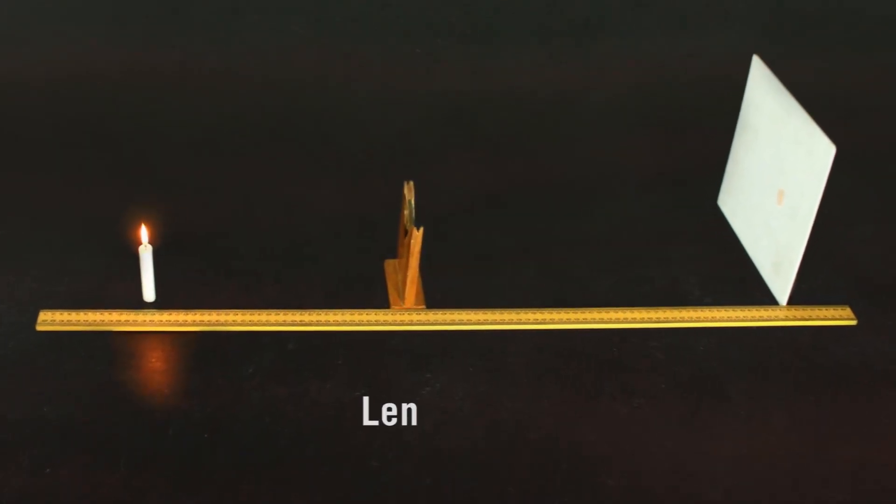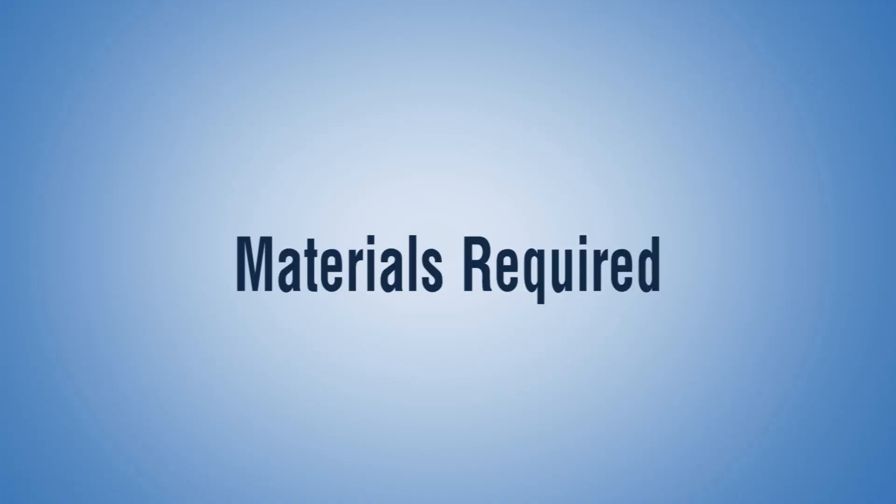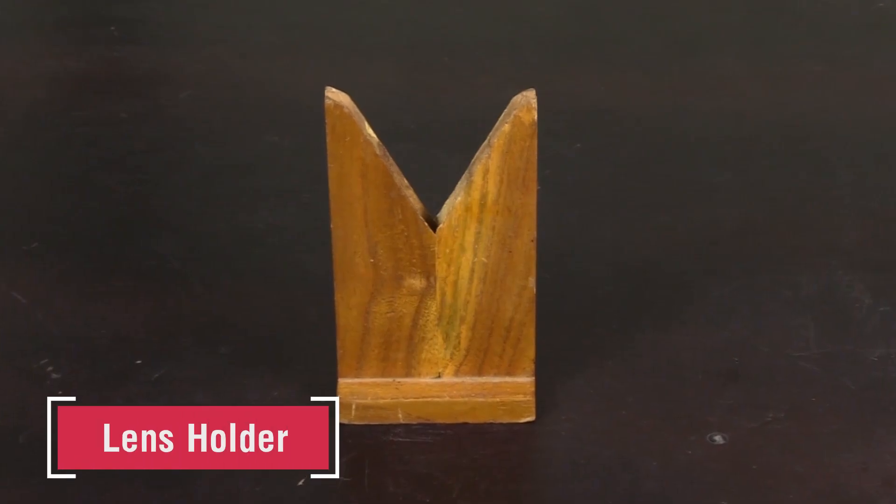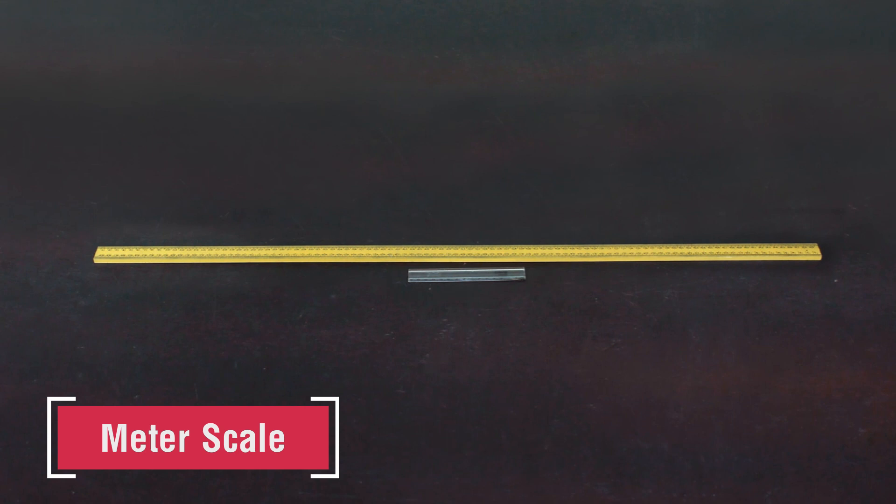Materials required: thin convex lens, a lens holder, a semi-transparent screen fixed to a stand, a meter scale, a small scale of 15 centimeters, a lighter, a small candle with a stand.